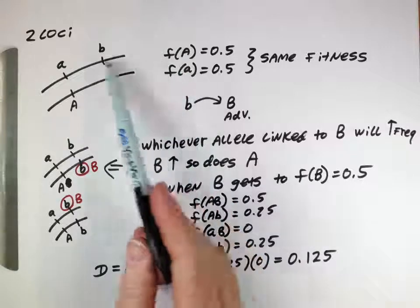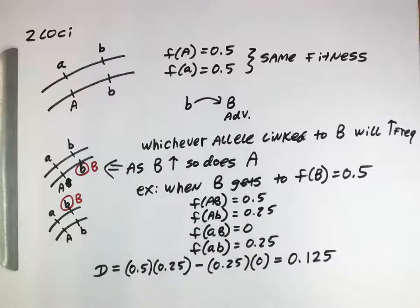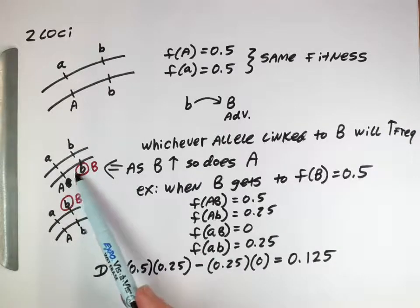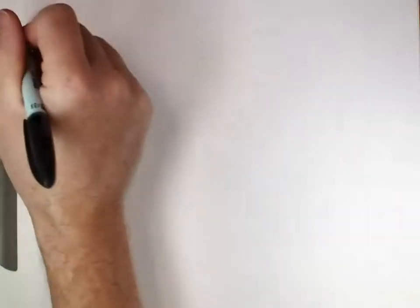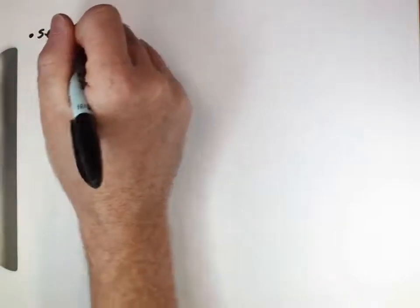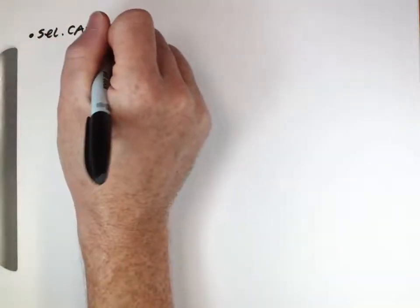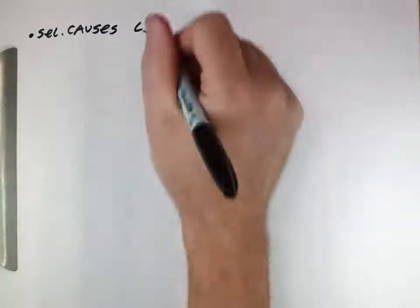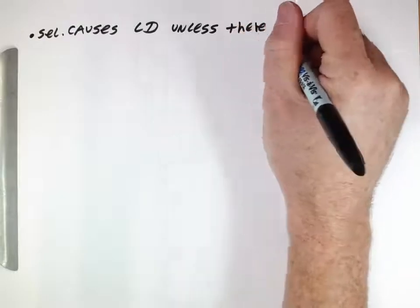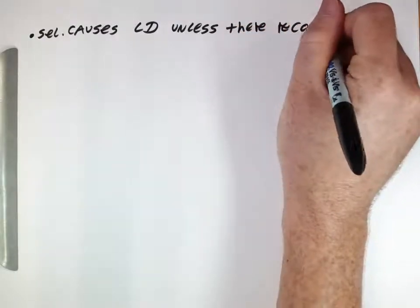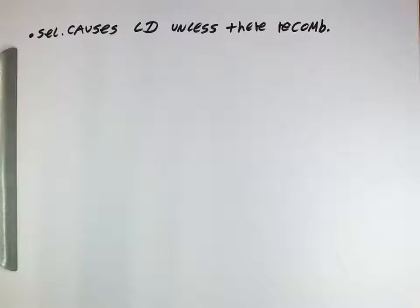So we can actually see how a selection process like this is one of the ways in which linkage disequilibrium can arise. If you have a bunch of different alleles and maybe linkage disequilibrium is initially 0, selection on a haplotype, if you don't have recombination, will cause this linkage disequilibrium. So to kind of just state this, selection causes linkage disequilibrium unless there is recombination. We saw earlier that recombination can reduce linkage disequilibrium.